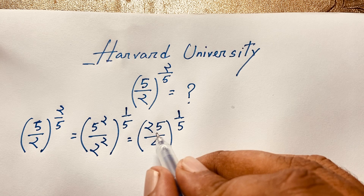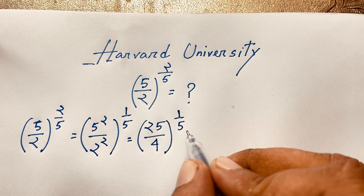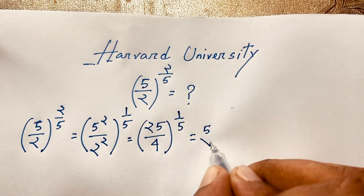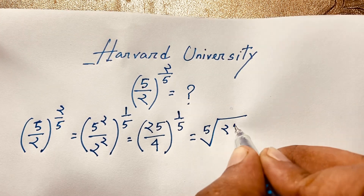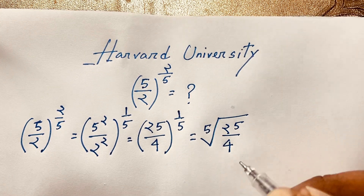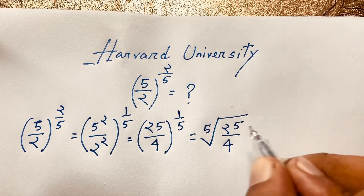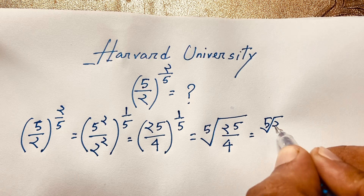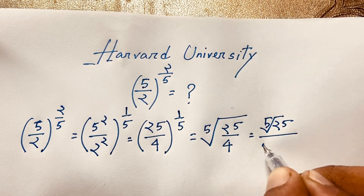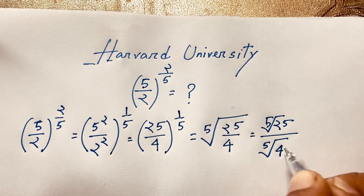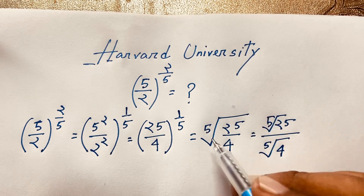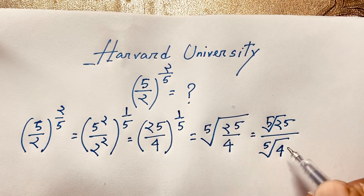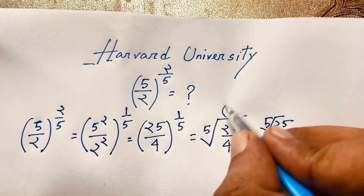According to the exponential law, a^(1/n) equals the n-th root of a. Applying this law, (25/4)^(1/5) becomes the 5th root of 25 over 4. Furthermore, the n-th root of (a/b) equals (n-th root of a) over (n-th root of b), so this becomes the 5th root of 25 over the 5th root of 4.